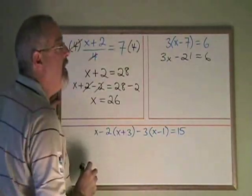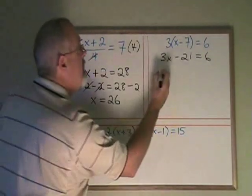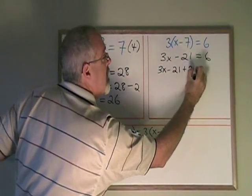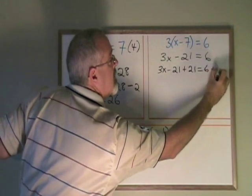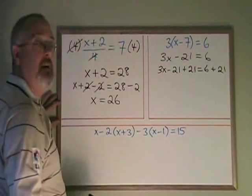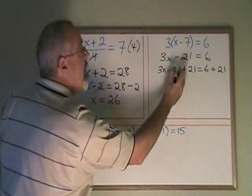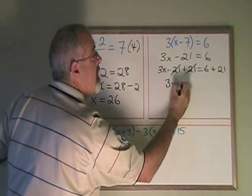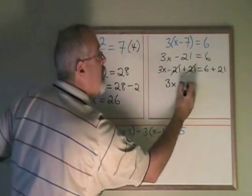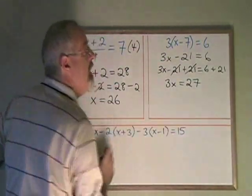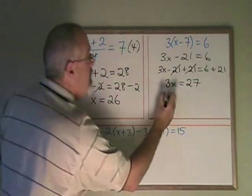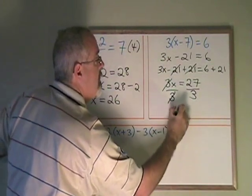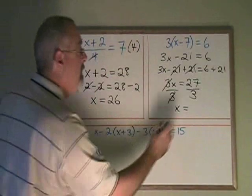We want to get this minus 21 away from our x, so we write 3x minus 21 plus 21 equals 6 plus 21. We add a 21 to both sides, and that allows us to cancel these 21s. We have 3x equals 6 plus 21, which is 27. And now our x is being multiplied by a 3, so we divide both sides by a 3. These cancel. x is equal to 27 divided by 3, which is 9.